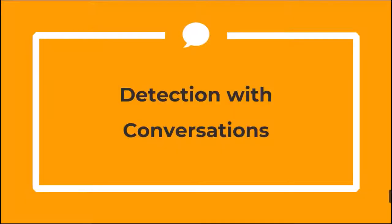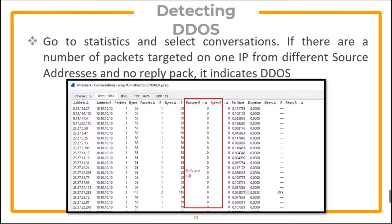Now let's see how we can detect a denial of service attack with conversations. Go to the Statistics tab and select Conversations. If there are a number of packets targeted on one IP from different source addresses and no reply back, it indicates a denial of service.